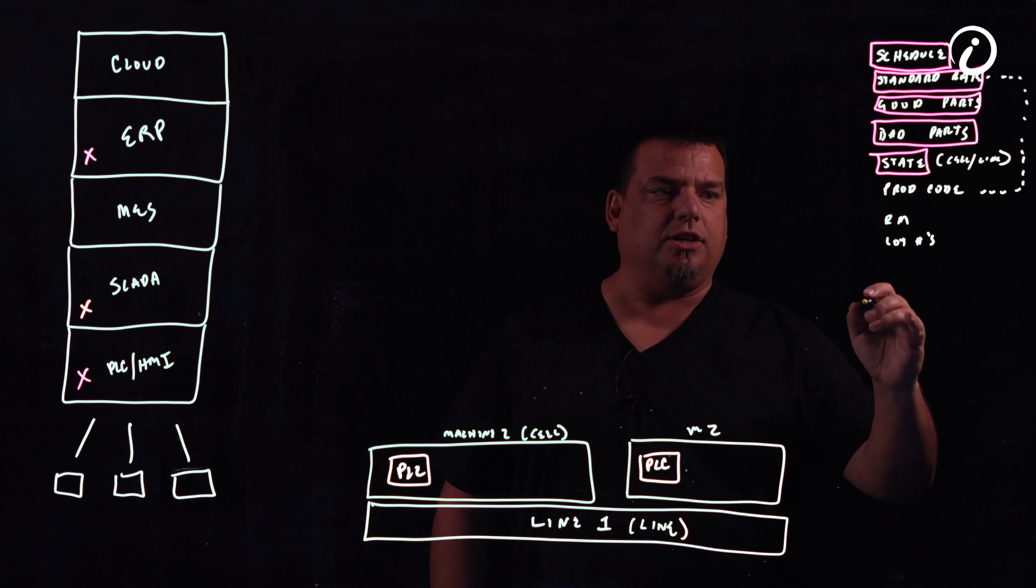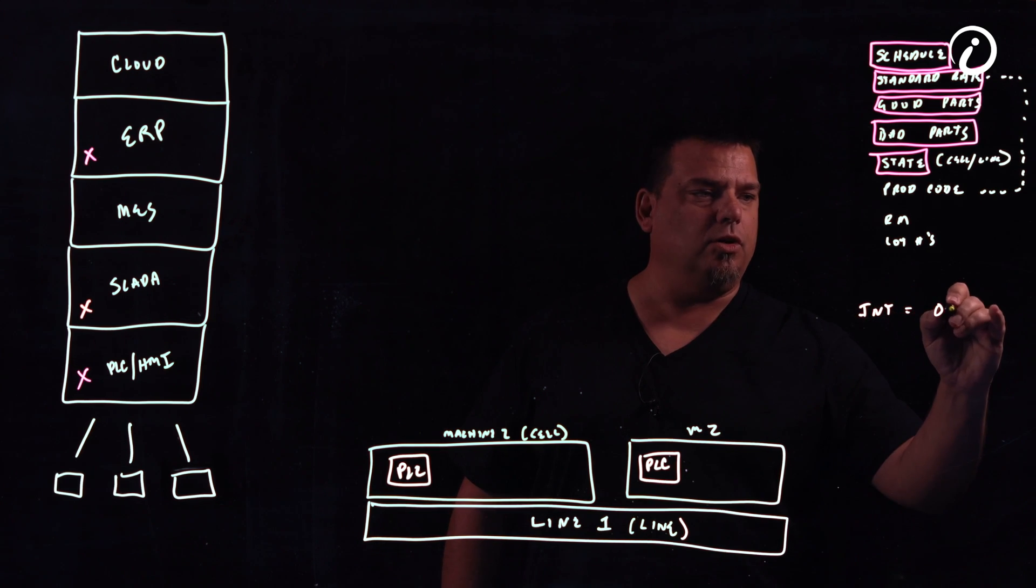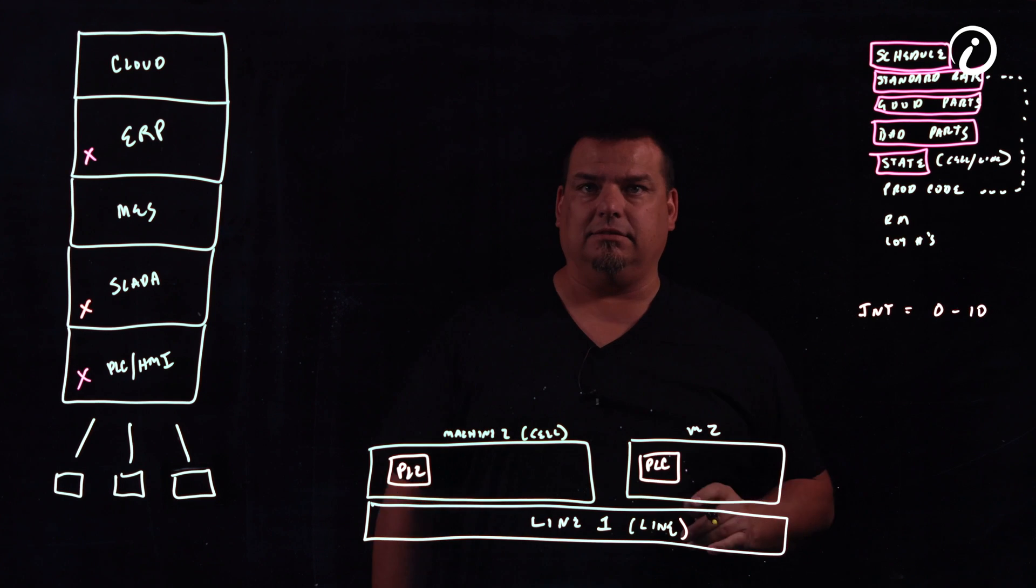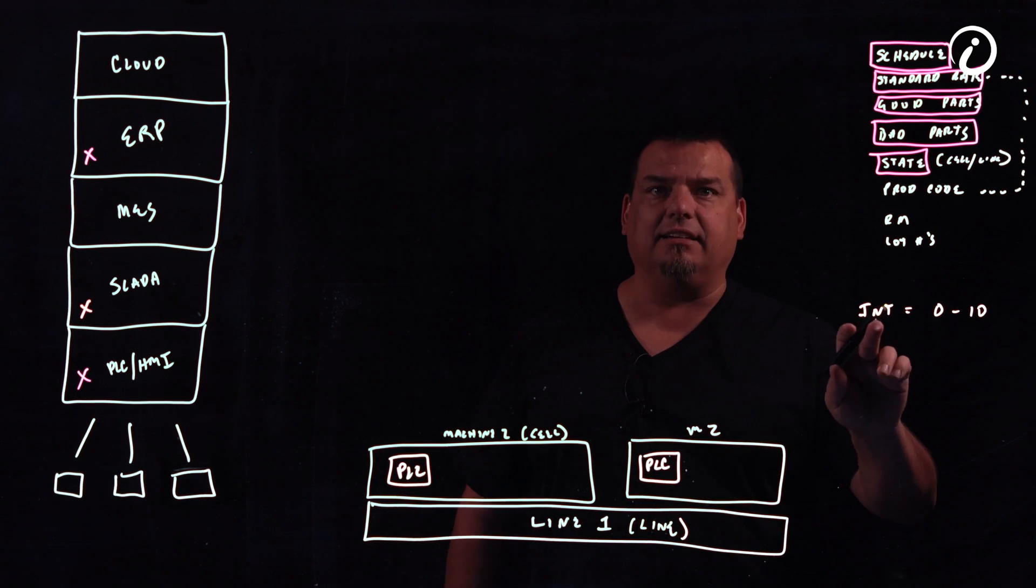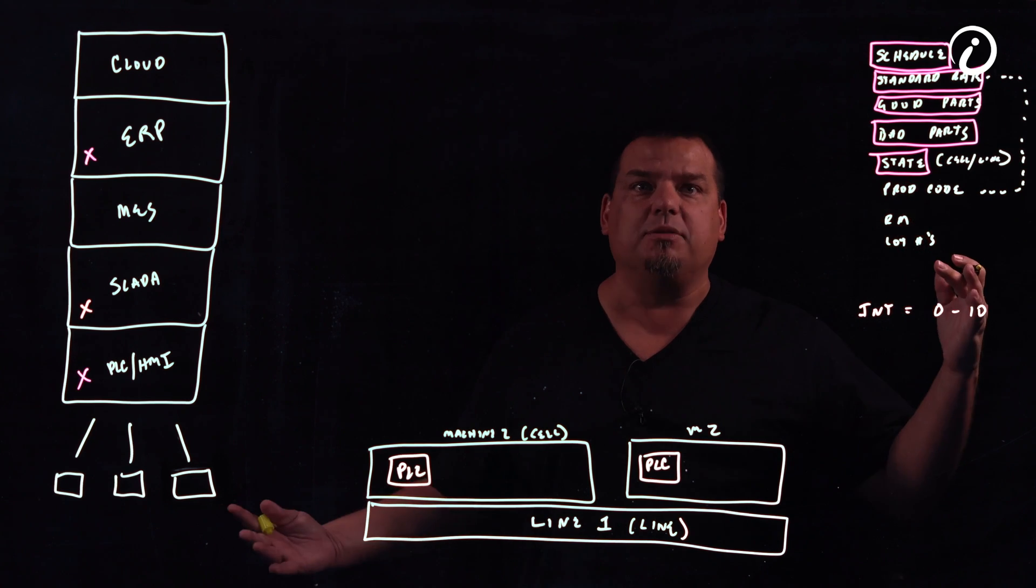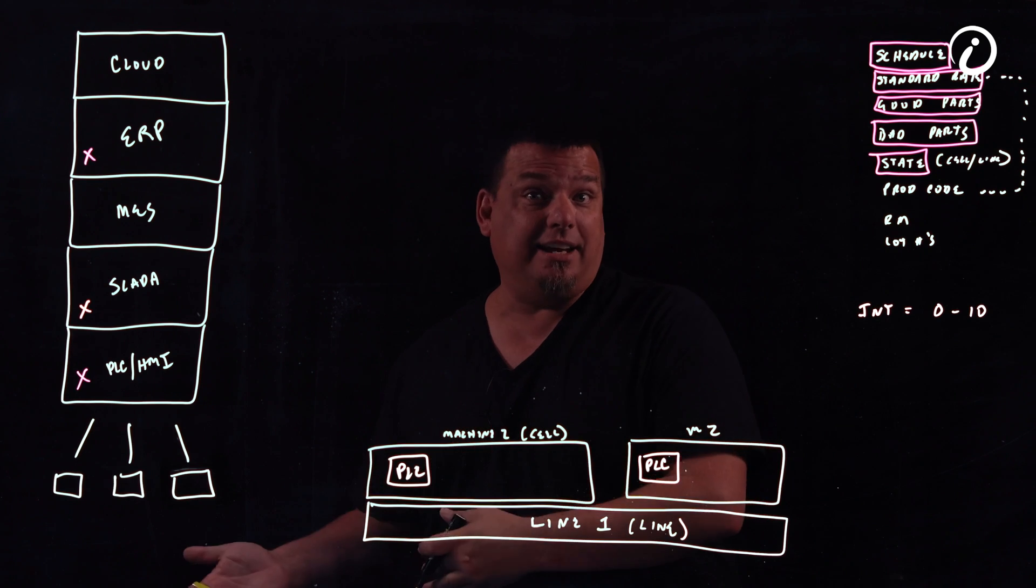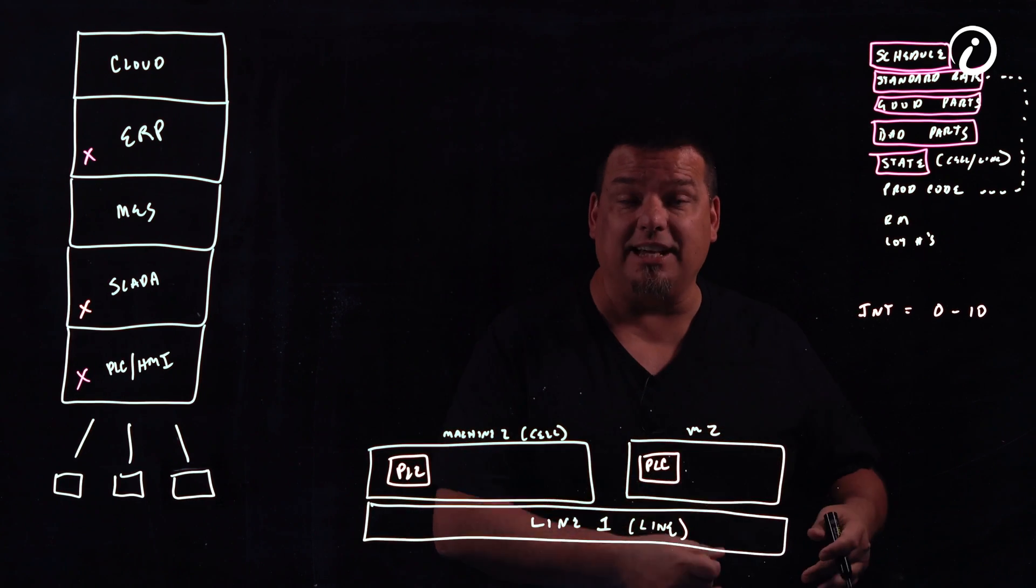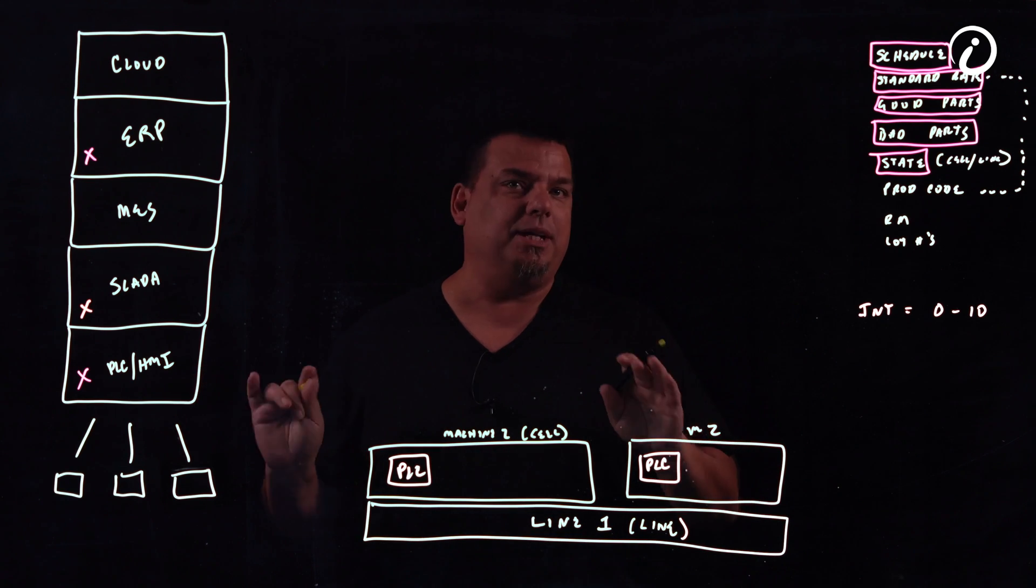Most companies don't ship their equipment with a state register. So a standard state register would be an integer that equals whatever, zero. Let's say it's zero to 10. What we have to do, we're going to be scanning this register to determine what the state of the machine is. Why? Because we use the state to determine is the machine in a planned downtime event? Is it an unplanned downtime event? Or is it running? There are some other numbers that we care about.